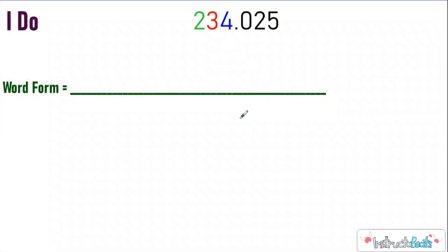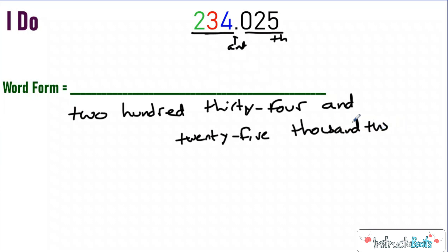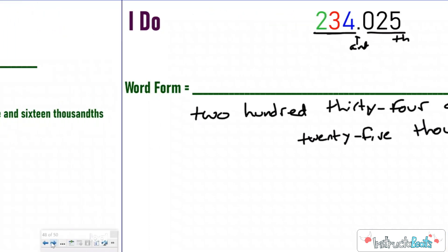All right, so here is our I do problem. We want to write it like we say it. So this one's pretty simple. So I just have 234 and, that's what the decimal says, 25, and then this is in the thousandths place, so thousandths. So 234, gotta have your hyphen there, and 25, so again, hyphen between the 20 and the 5, thousandths with the THS. Write it like you say it.